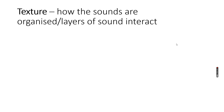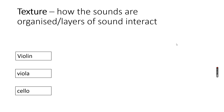Texture is basically how sounds are organised, or the layers of sound and how they interact. So just for a minute we're going to look at three instruments. Let's say we have a violin playing a little melody by itself. That would be given a name in terms of the texture — how that sound is organised, how that layer of sound is interacting just by itself. We'd give that a name which we're going to learn about in a few minutes.